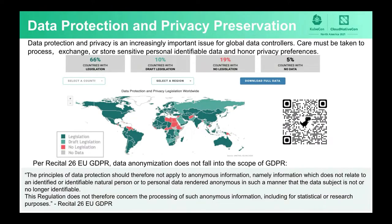The IT industry addresses such requirements by using two techniques: pseudonymization and anonymization. The difference is whether the transformed data can be switched back to their original forms through another process. For example, data encryption and decryption is a form of pseudonymization. Once encrypted, the data can be used in computation, transmission, and persistence. Data protection laws such as GDPR recommend pseudonymization because it protects data privacy.